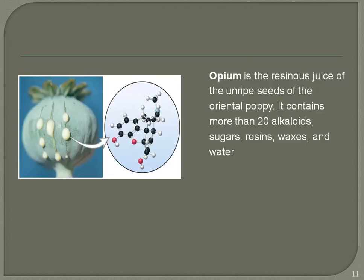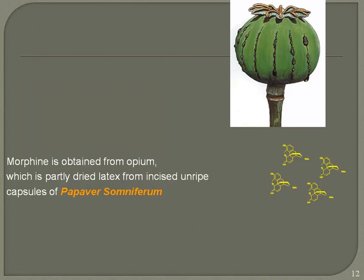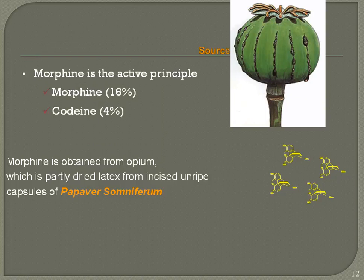Opium is the resinous juice of unripe seeds of the oriental poppy. It contains more than 20 alkaloids along with sugars, resins, wax, and water. Morphine is obtained from opium, which is the partly dried latex from unripe capsules of Papaver somniferum. Morphine is the active principal component at 16%, and codeine is 4% in opium.